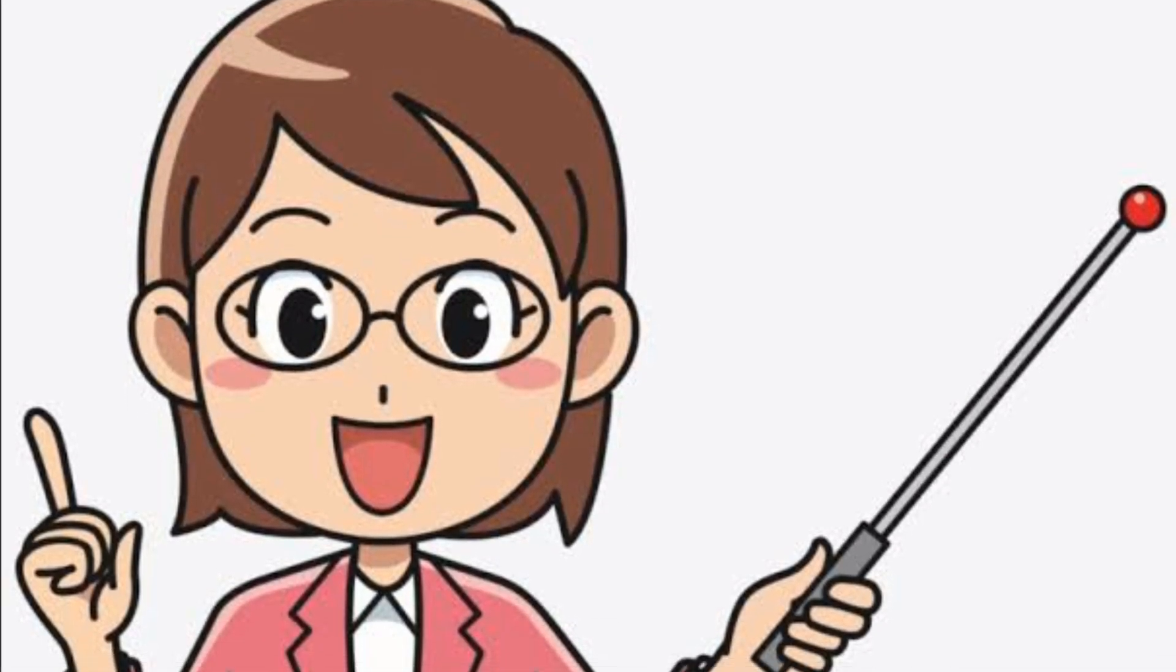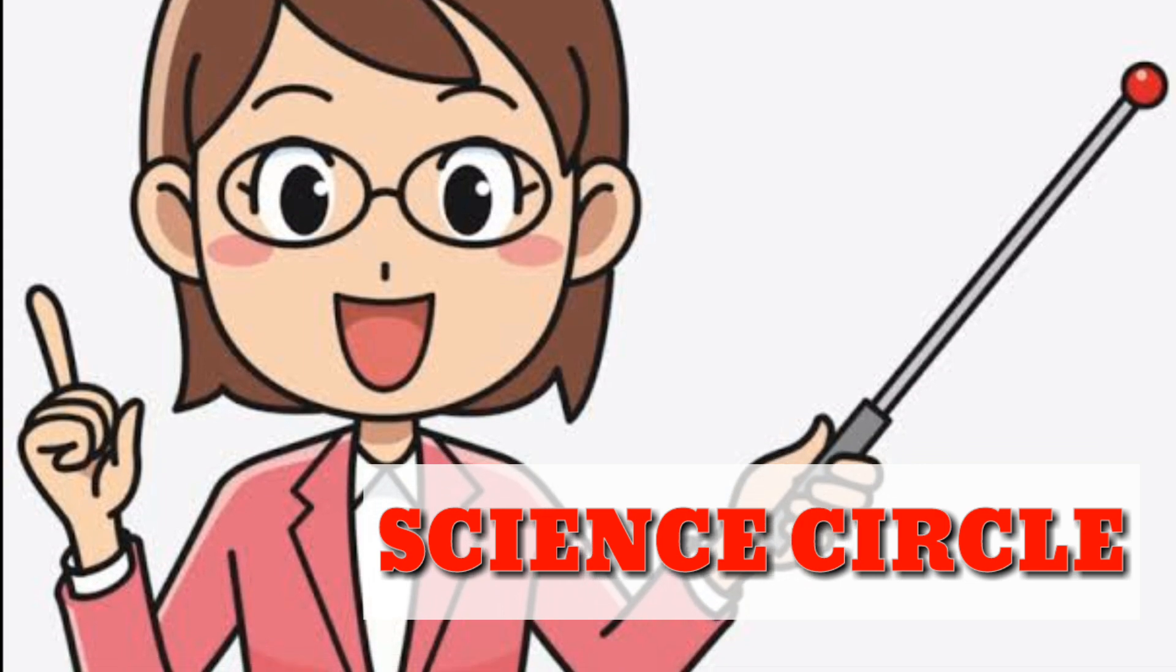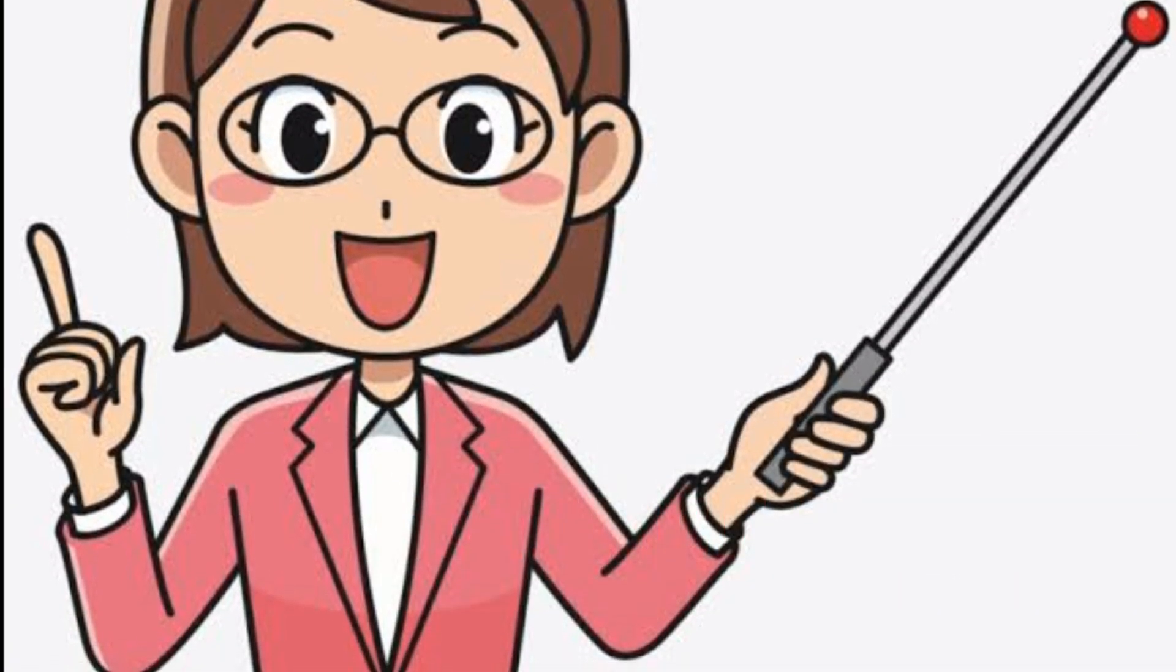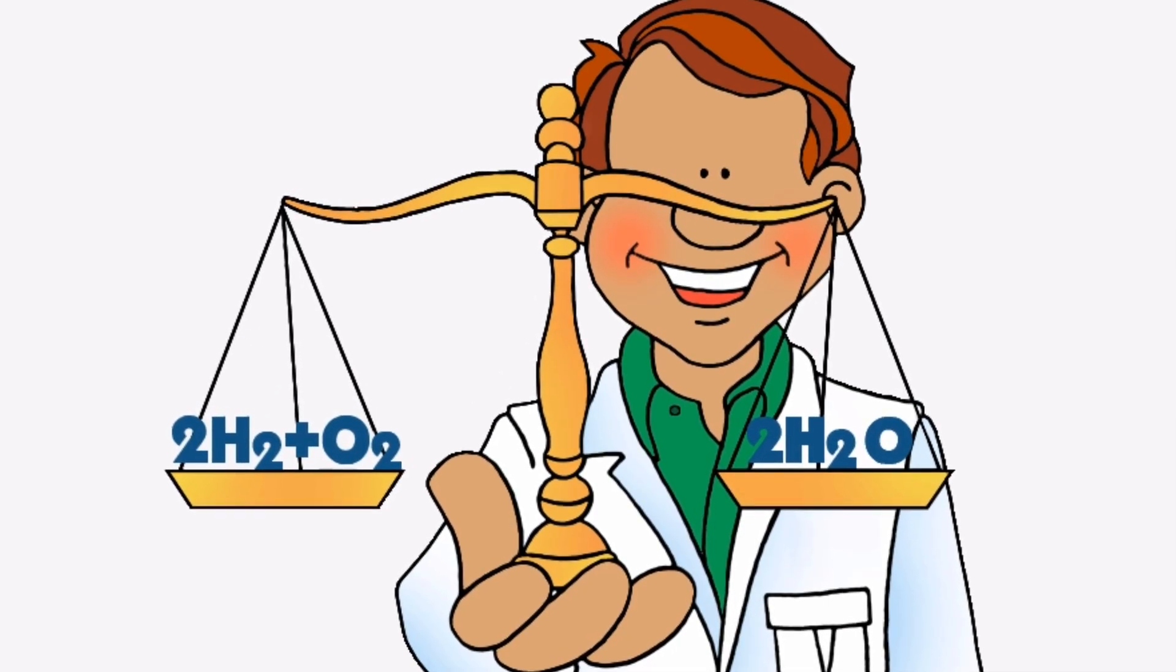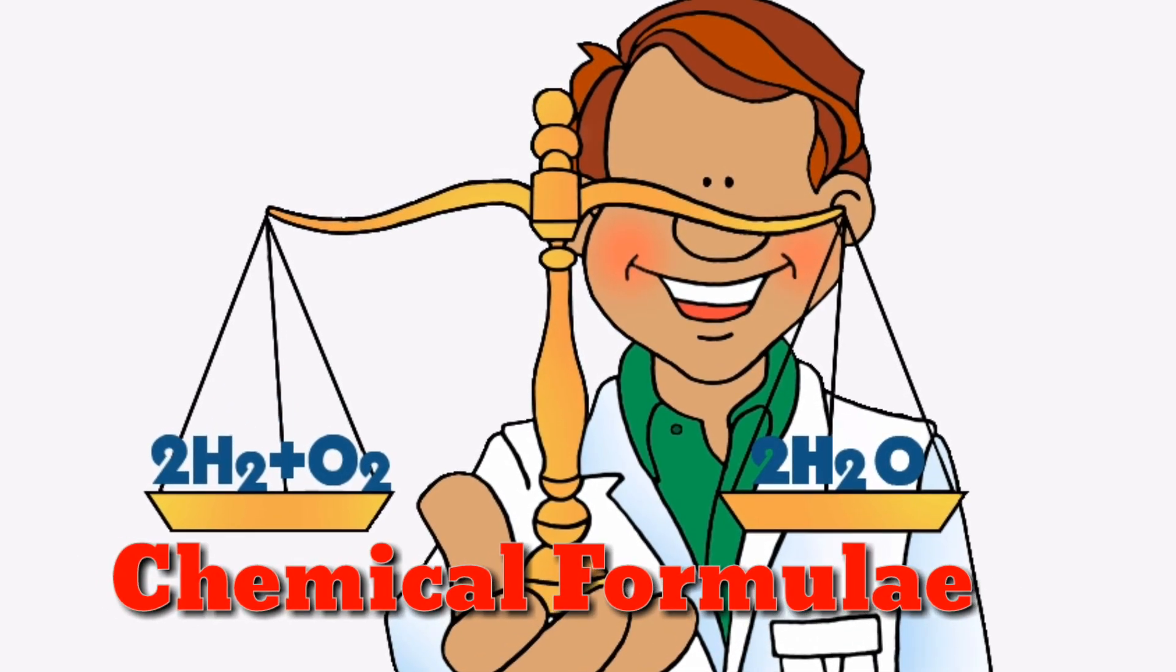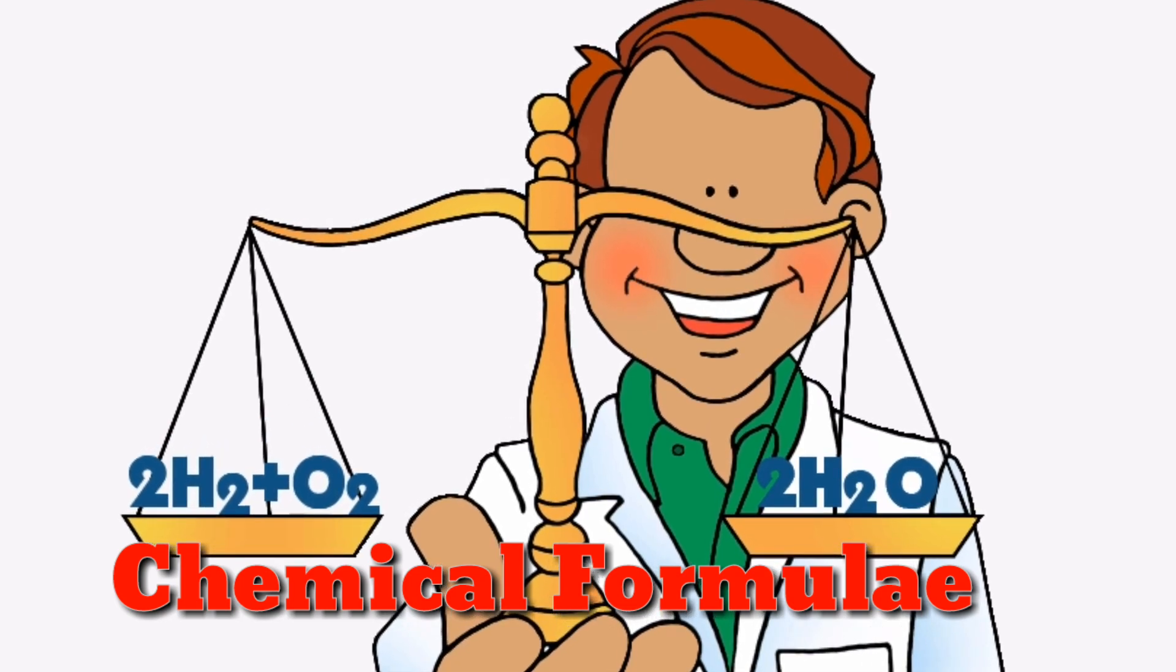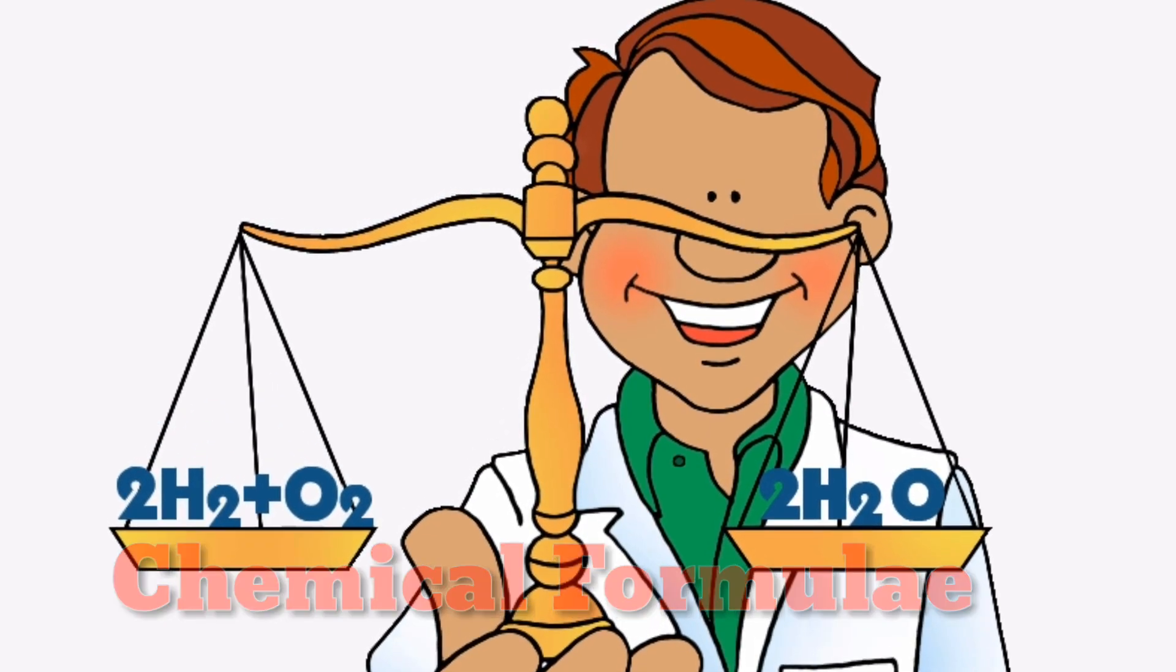Hi everyone, welcome to Science Circle. Today we will discuss a very important topic in chemistry: how we get different chemical formulas. Our topic is simple chemical formula, yet little tough to understand.